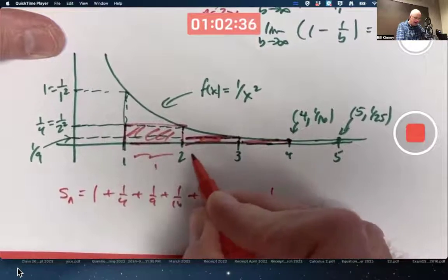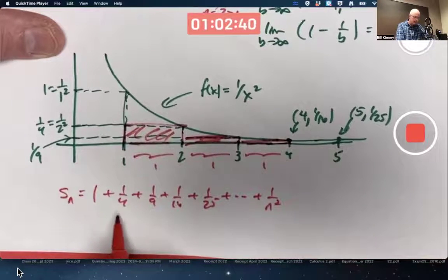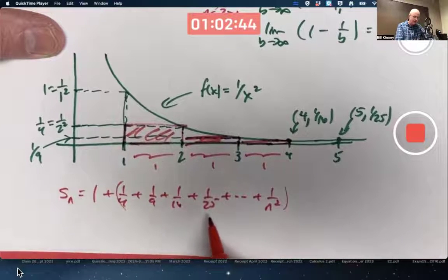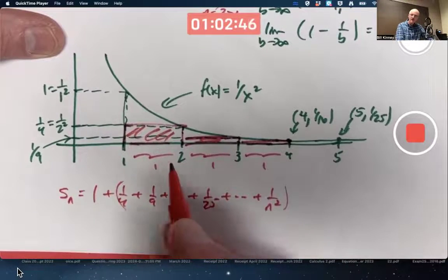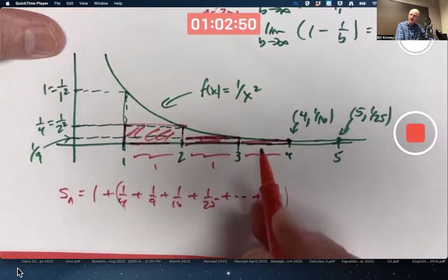those rectangles all have a base of 1 and a height equal to the numbers 1 fourth, 1 ninth, 1 sixteenth, etc. They're under the graph of f, so the sum of those areas is less than the area under the graph of f.